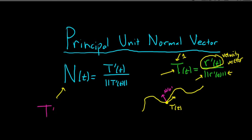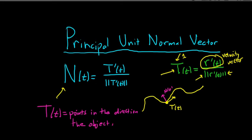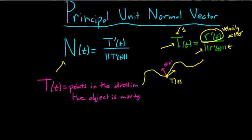So T(t) is the tangent vector and it always points in the direction the object is moving. Now N(t) is orthogonal to T(t), and I'll explain why mathematically in a few seconds.